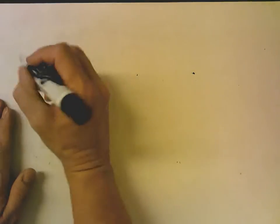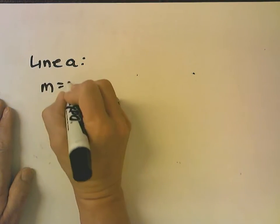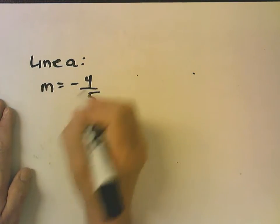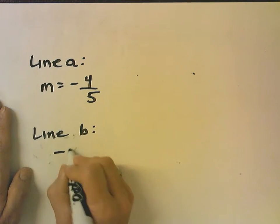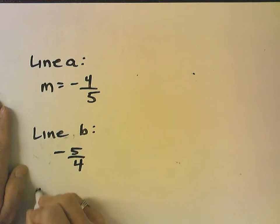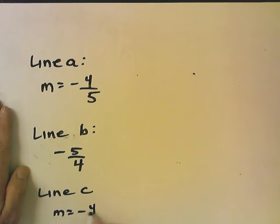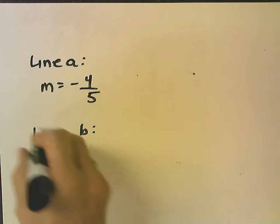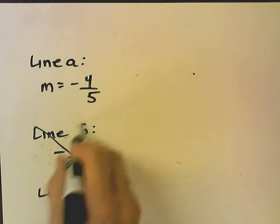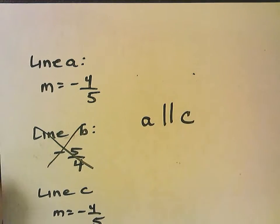For number 6, the slopes are given directly. Line A has slope negative 4 fifths, Line B has slope negative 5 fourths, and Line C has slope negative 4 fifths after dividing by 5. Although A and B appear to be reciprocals, they're both negative, so they're not perpendicular. B has no relation to A or C. A is parallel to C.